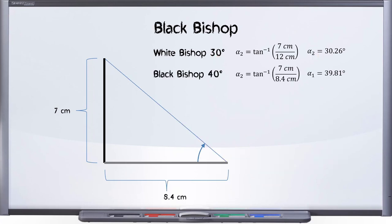Let's take a look at the black one. The difference here is the shadow was a little shorter. So we plug in those numbers, and we get now 39.81 degrees. And we had said 40 degrees with the protractor. So that's pretty good. I think that's definitely within the error tolerance possible on the protractor.